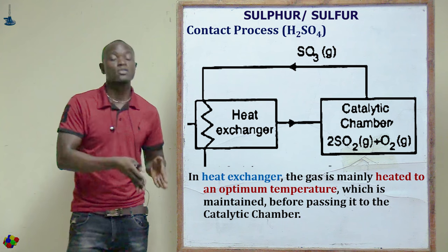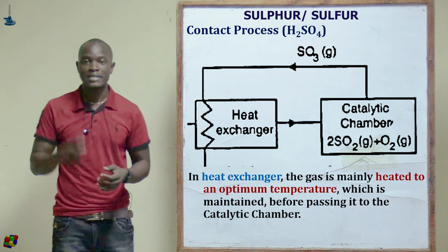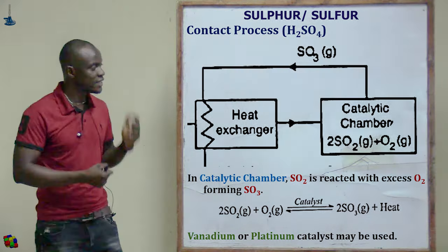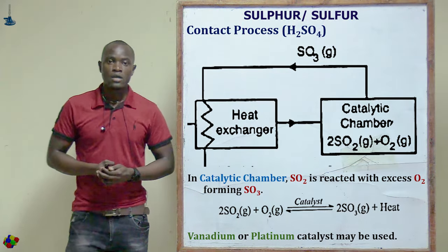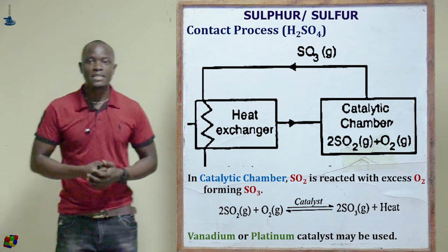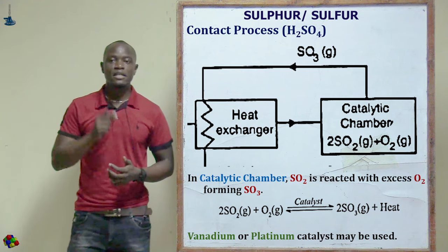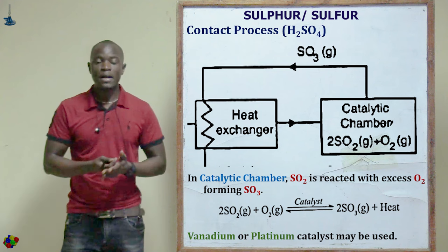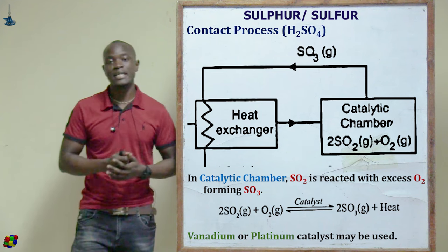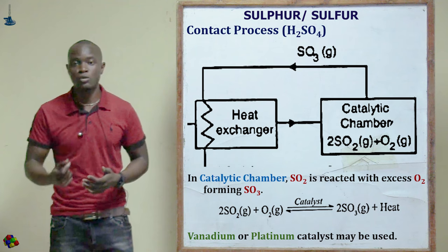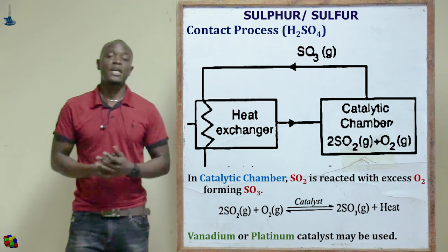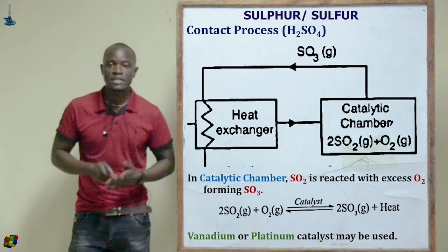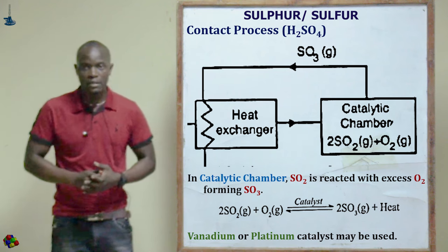In the catalytic chamber, a catalyst is used to react sulfur dioxide (SO₂) with oxygen, whereby in the presence of this suitable catalyst, SO₂ reacts with oxygen in an equilibrium reaction to form sulfur trioxide (SO₃) and heat. Heat is generated in this chamber.